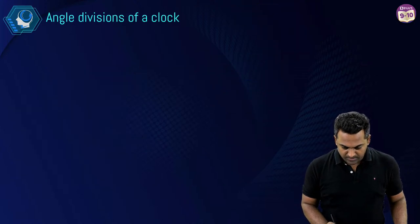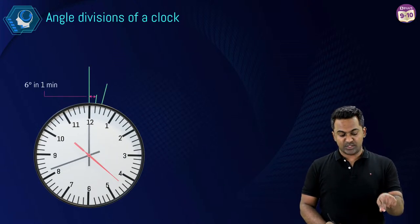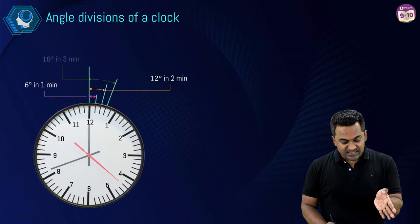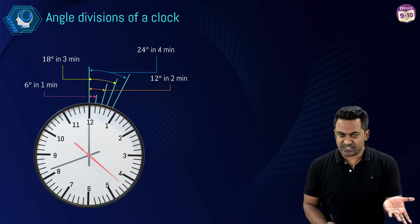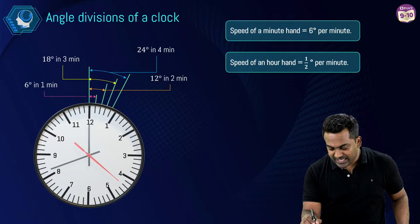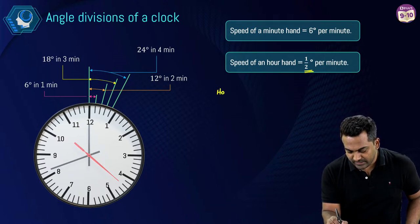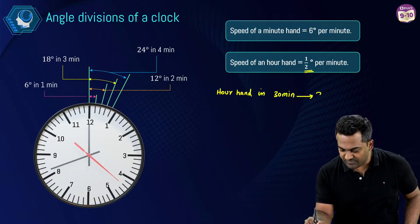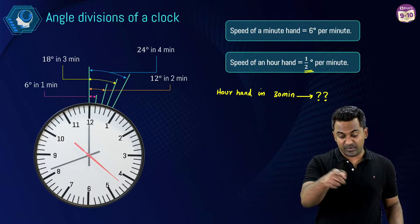The minute hand in one minute covers 6 degrees, so in two minutes 12 degrees, three minutes 18 degrees, four minutes 24 degrees. Similarly, the hour hand covers half a degree per minute. Question: the hour hand in 30 minutes covers how many degrees? Come on, go ahead and answer.